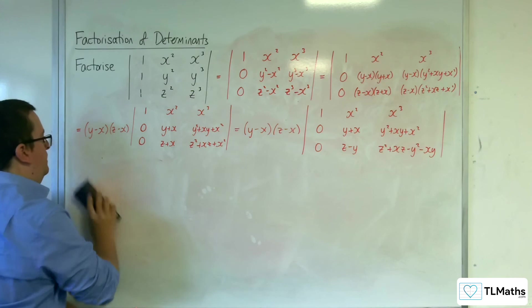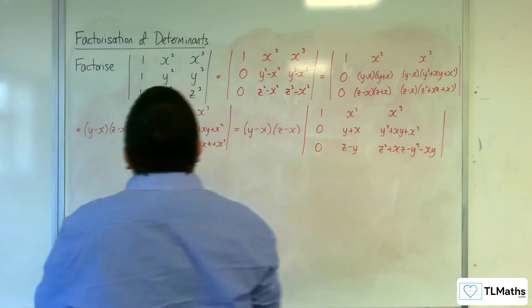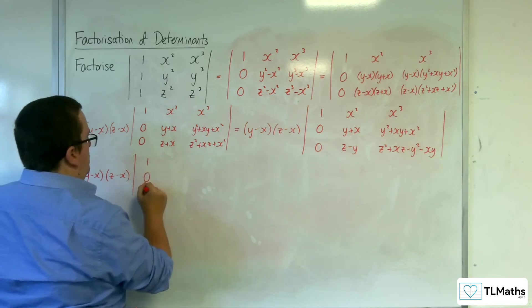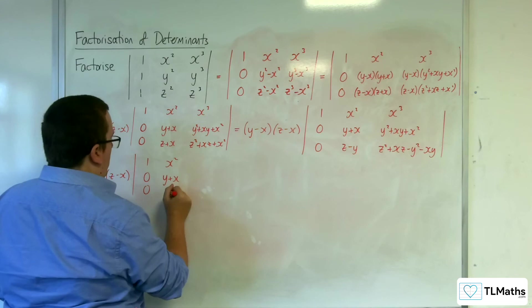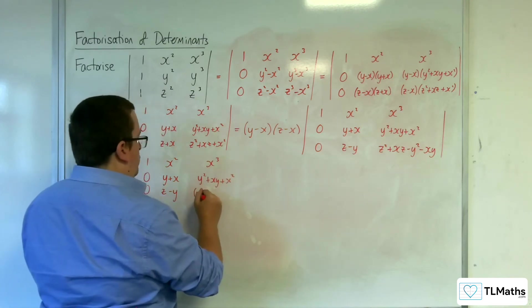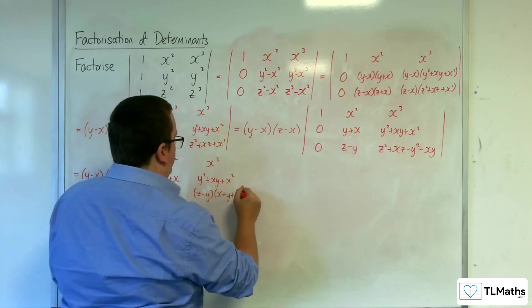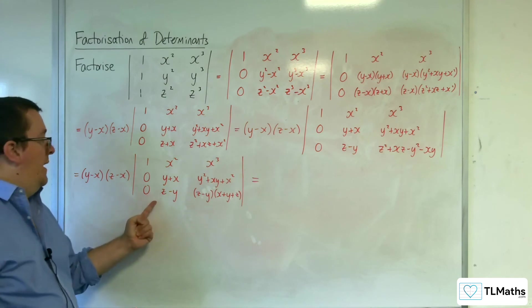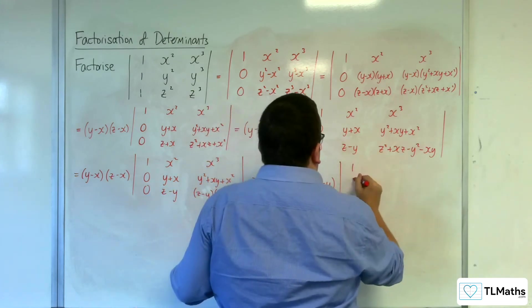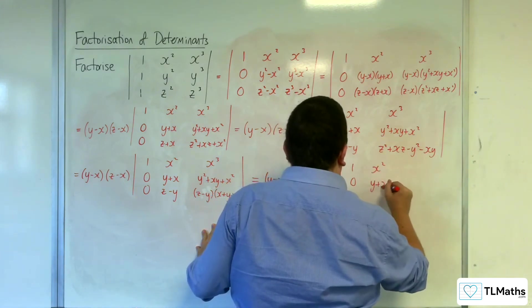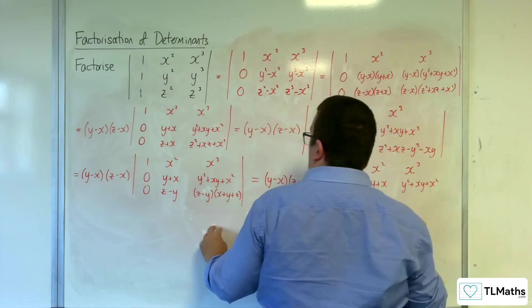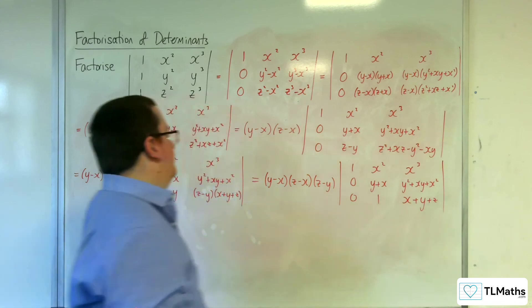Using that result, the matrix now has rows: 1, 0, 0; x², (y + x), 1; x³, (y² + xy + x²), (x + y + z). I can factor (z − y) out of the third column, giving a total factor of (y − x)(z − x)(z − y) times the determinant of that 3×3 matrix.